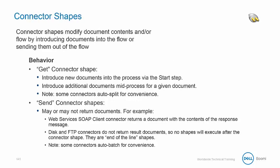Connector shapes execute interactions with internal data sources. Send connectors do not impact the document instances but can replace an inbound document that is posted to a target with a return code document. Get connectors perform a new query and completely replace the inbound document stream with a new document set that can have completely different characteristics as to profile, grouping, and document ID.